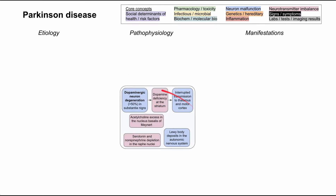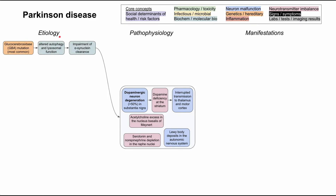We'll talk about the etiologies first. There are a few different types. The most common hereditary cause is a mutation in glucocerebrosidase — the GBA gene. This results in altered autophagy and lysosomal function, which leads to impaired alpha-synuclein clearance. One of the key findings in Parkinson's disease on a molecular level is an increase in the protein alpha-synuclein, so impaired clearance predisposes you to the disease.